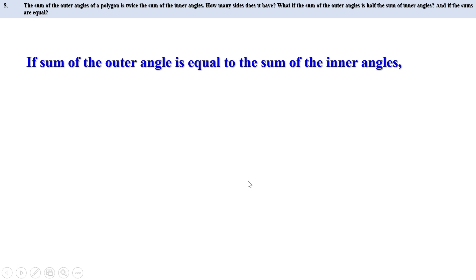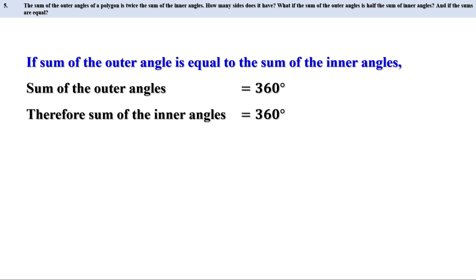Thirdly, if the sum of inner and outer angles are equal: the sum of outer angles is 360 degrees, so the sum of inner angles is also 360 degrees. A polygon with inner angle sum of 360 degrees is a quadrilateral, so the number of sides is 4.